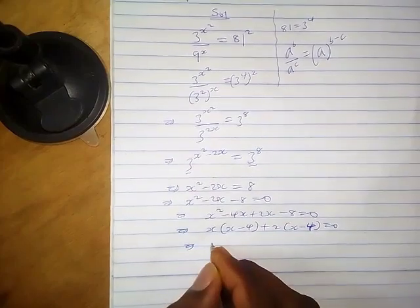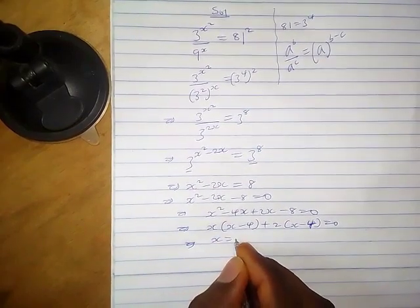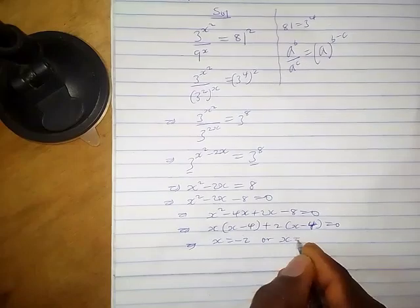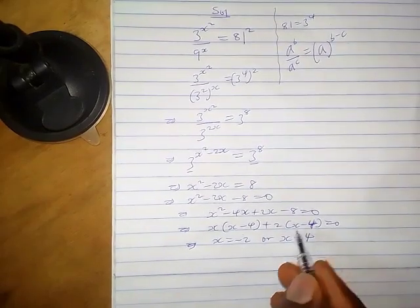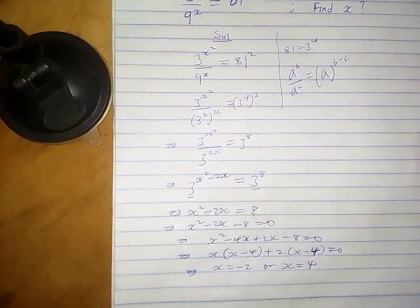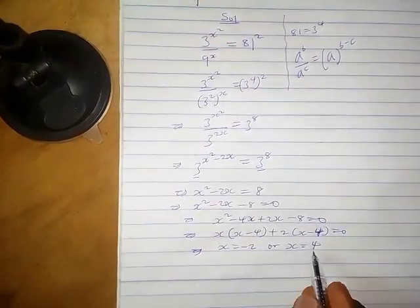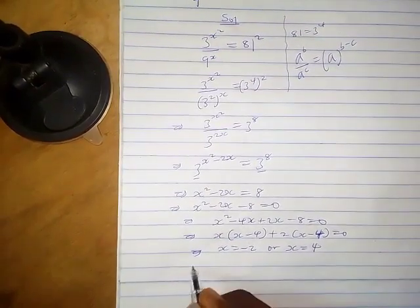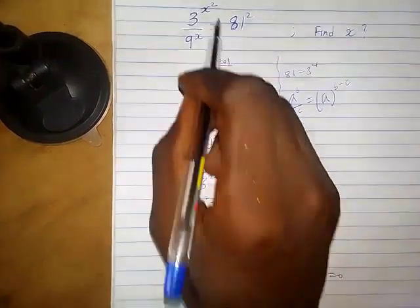Which is either x equals minus 2 or x equals 4, when we set each term to 0. Now how do we check what we have done is right? Let's confirm for when x equals 4.